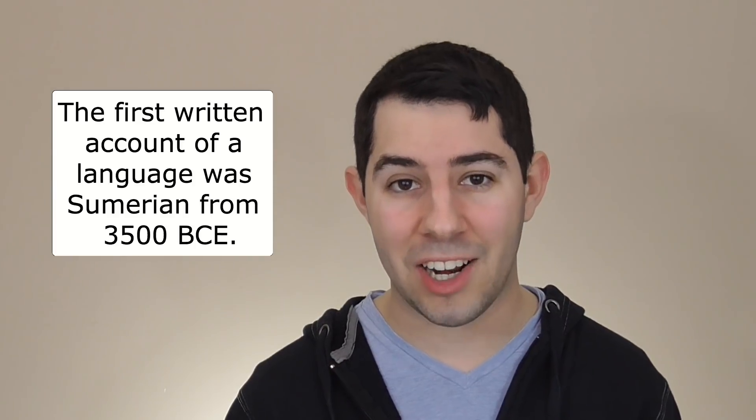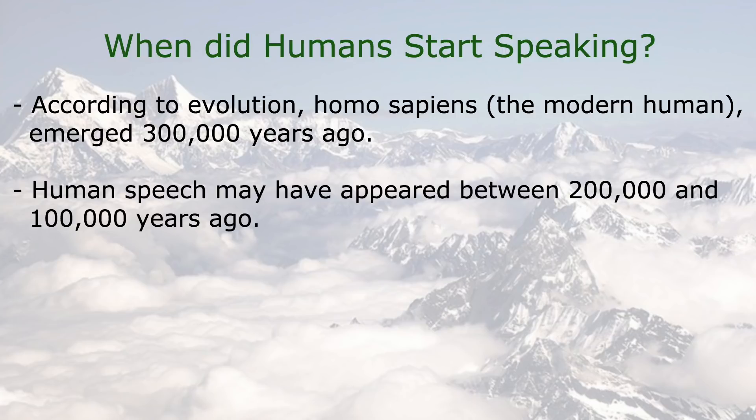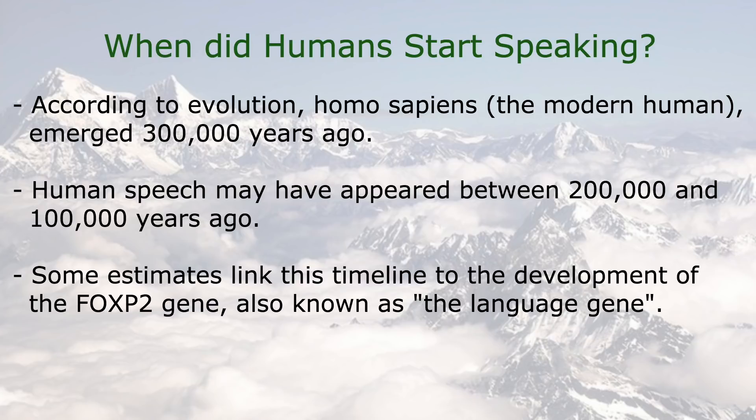Given the fact that speech doesn't really leave any artifacts — or at least it didn't back then — and also the fact that humans didn't begin to write language until about 5,000 years ago, it is actually quite difficult to figure out when exactly we started speaking. Estimates place human speech to around 200,000 to 100,000 years ago. This is due to the fact that we can trace the development of a gene called the FOXP2 gene, or the language gene, and apparently this gene gave humans the ability to talk that other animals didn't have. So it's safe to say that humans have been speaking some sort of language for a while, but how exactly did that language — or those languages — come into existence?